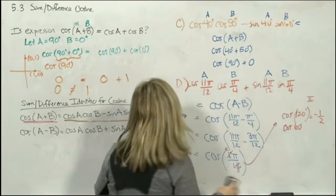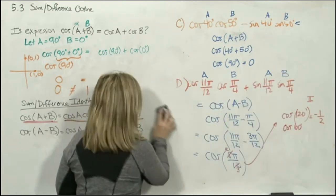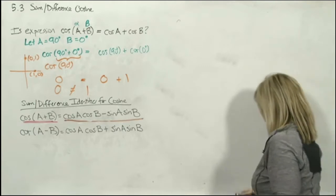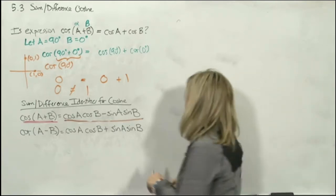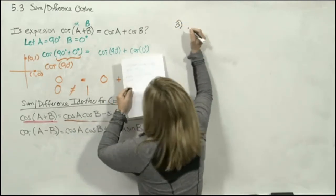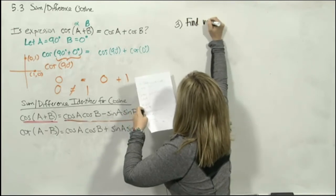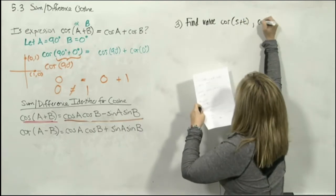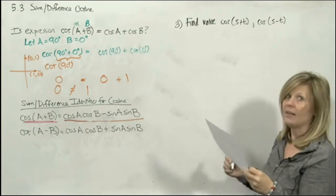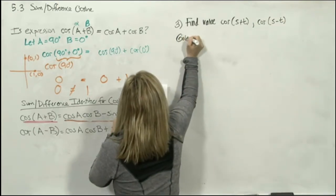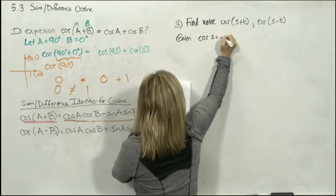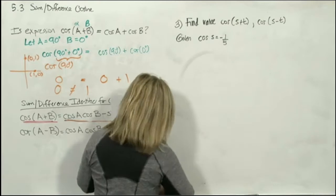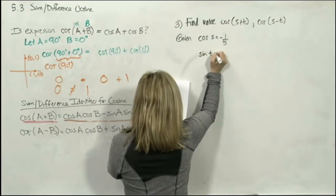I'm going to let you work on Example 2 on your own in the notes, but I do want to look at one more — Example 3. The last example we'll work in this section says: find the value of cosine(s + t) and cosine(s − t).